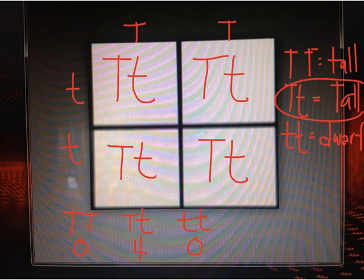Since tall is dominant over dwarf, therefore there is also 100% probability that these offspring all have tall stems, and none of them will have a dwarf stem.